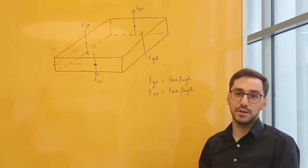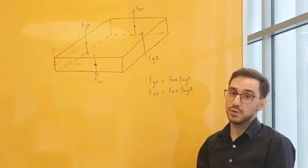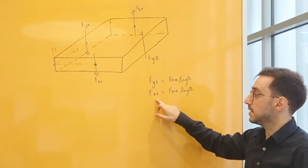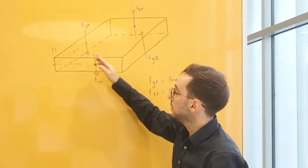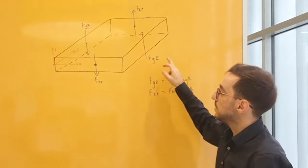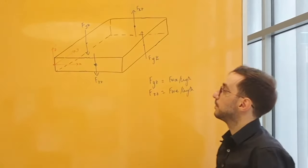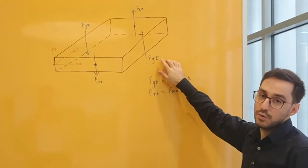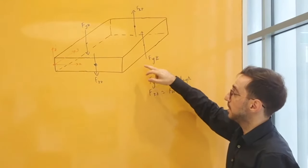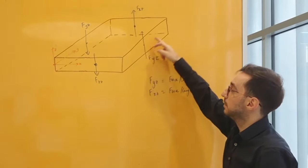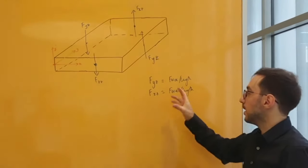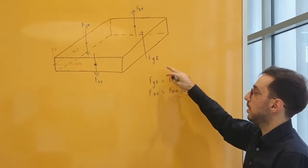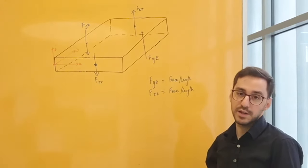Now we're going to talk about the out-of-plane shear forces. We've got two out-of-plane shear forces: fxz and fyz. fxz is the out-of-plane shear force in the xz plane, and fyz is the out-of-plane shear force in the yz plane. The units are again force per unit length. To get the total force of fyz, multiply the fyz force by the length of the face that it's acting on.